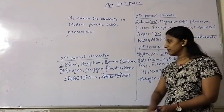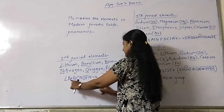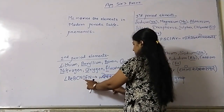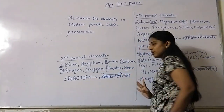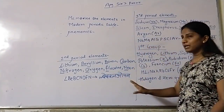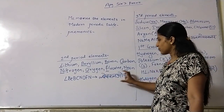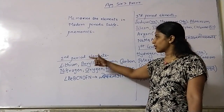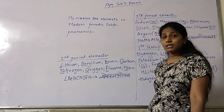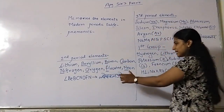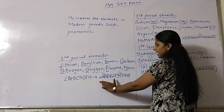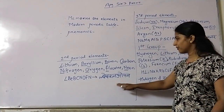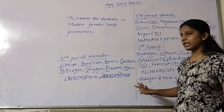Look at the Hindi pronunciation of the initials: La, Be, Ba, Ka, Na, O, Fa, Na. Now we form these into a sentence or word. The phrase becomes: 'Blade Bakan Open.' This is our mnemonic for the second period elements — Blade, Bakan, Open.